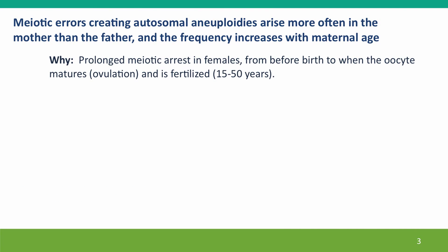Meiotic errors that create aneuploidies arise more often in the mother than the father, if they're autosomal aneuploidies, and the frequency increases with maternal age. The reason for this is the prolonged meiotic arrest in females that happens from before birth to when the oocyte matures, and this can be as much as 50 years later.